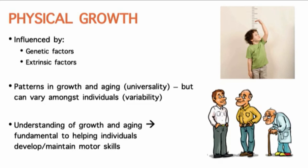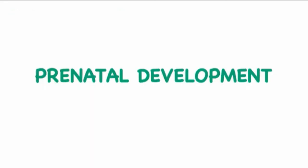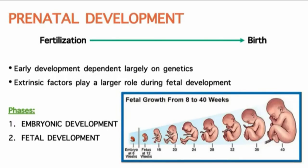As we go through the lifespan, the very first place we need to start is prenatal development. There are two stages of prenatal development, spanning from fertilization all the way up to birth. Early development is generally going to be dependent on genetics, but there are potential extrinsic factors that can play a role. The phases break down like this: the embryonic development phase, which you can see in the image on the right, is pretty short — basically from fertilization up until about eight weeks. From there, the rest of development we call fetal.